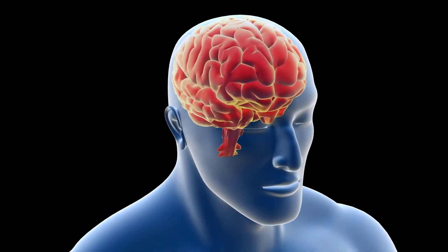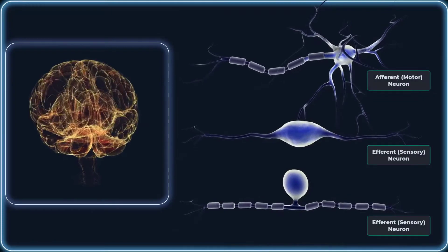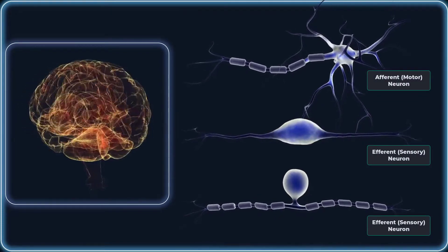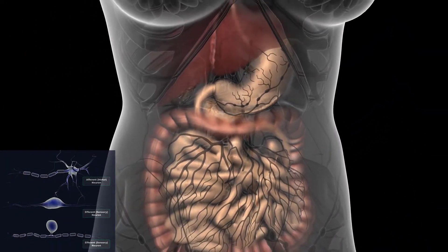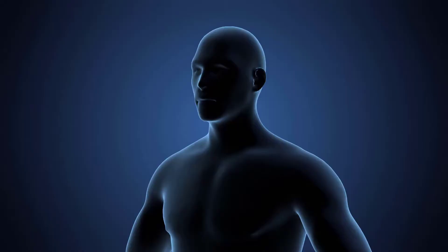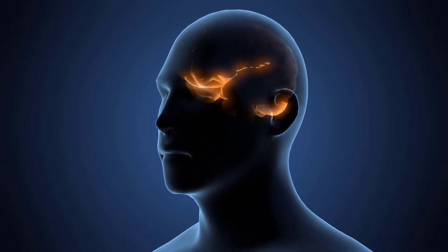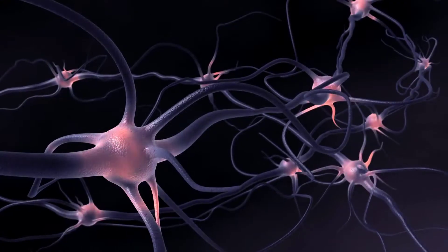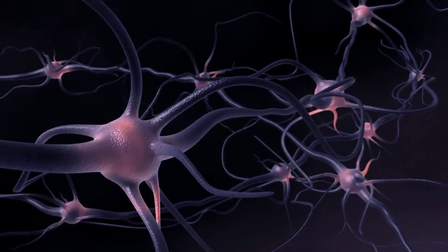The autonomic nervous system, like the somatic nervous system, has afferent and efferent neurons. However, in the autonomic nervous system, the afferent pathways originate in visceral receptors, and the efferent pathways connect to visceral effector organs. In addition to the differences in receptor and effector organ location, the autonomic nervous system differs from the somatic nervous system in the arrangement of the neurons connecting the central nervous system to the effector organs.